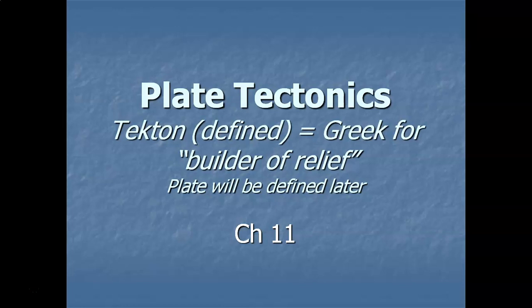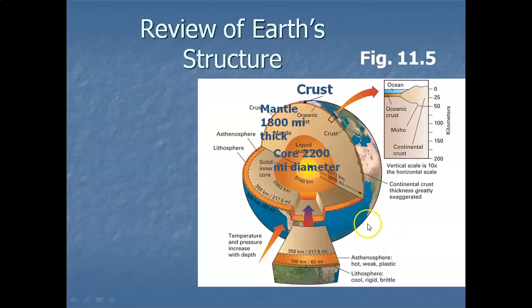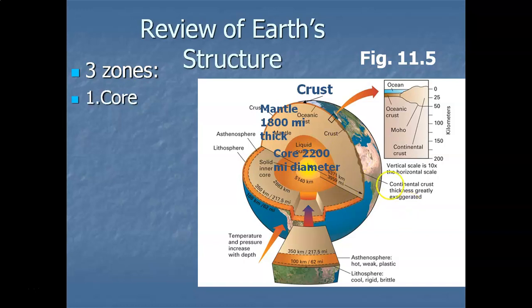We'll be defining the words 'plate' and 'plate tectonics' in a few slides. To begin, let's take a slice through the earth and review its structure. You can define three zones simply. The first zone — the earth's core — we're not really concerned with, but it's a thick zone averaging over 2,000 miles in diameter.